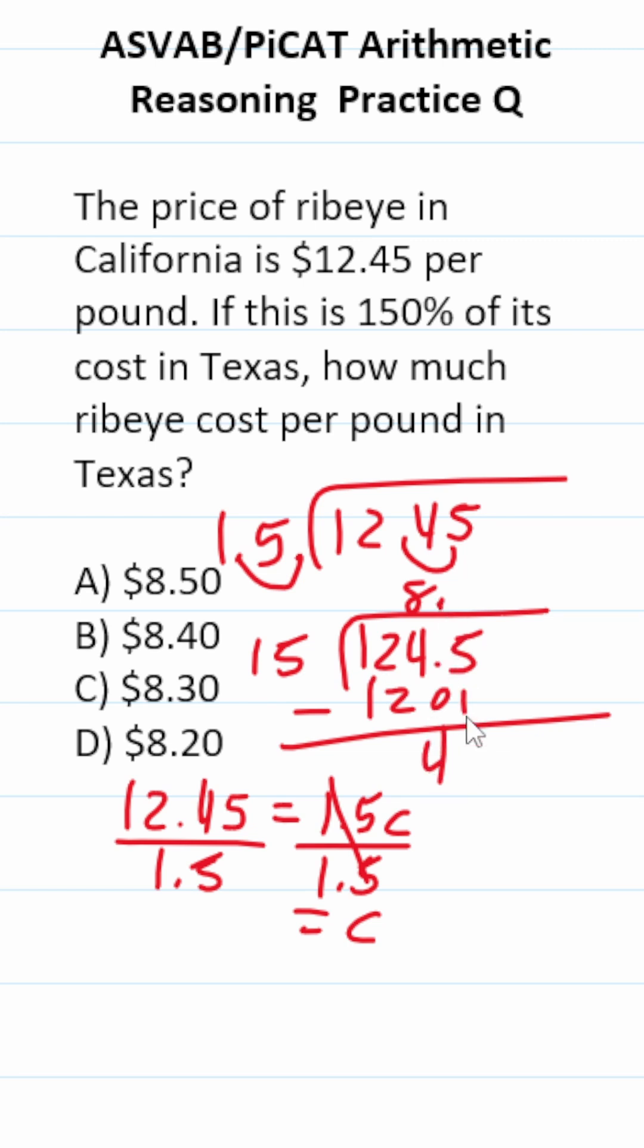Bring our decimal into our answer. Drop down this 5. 15 times 3 is exactly $45 with no remainder. So its cost in Texas is C, $8.30.